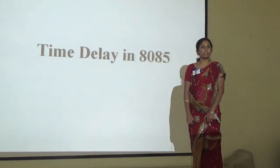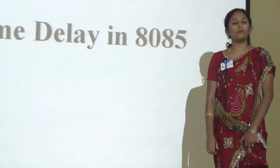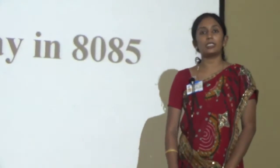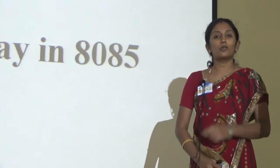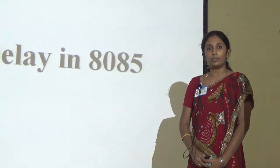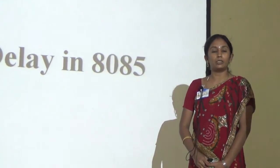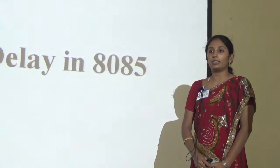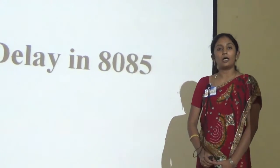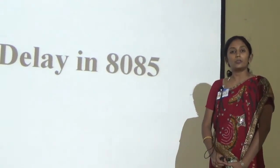We know how a microprocessor works and what are the instruction sets in the 8085 microprocessor. We know the importance of generating a time delay in a program. It is used in many practical applications like a traffic light — red will glow for a period of time, then switch off, then yellow, then green. Timing delay plays a very important role in applications like traffic lights, motor control, and many others.